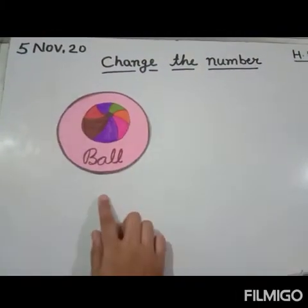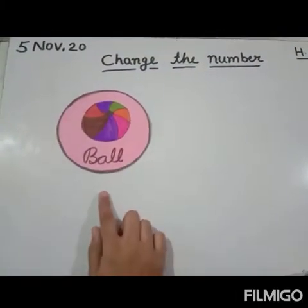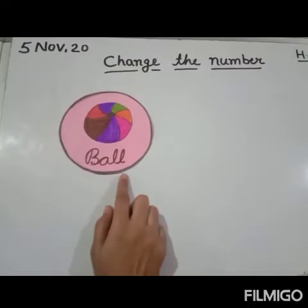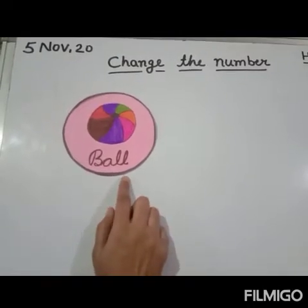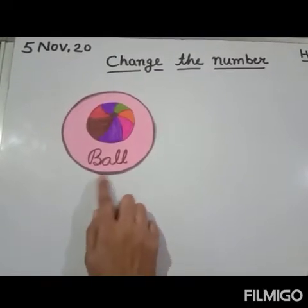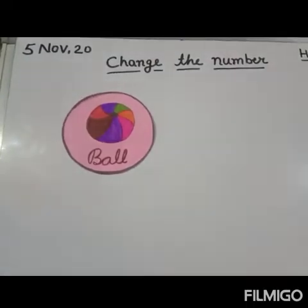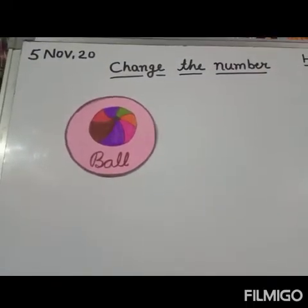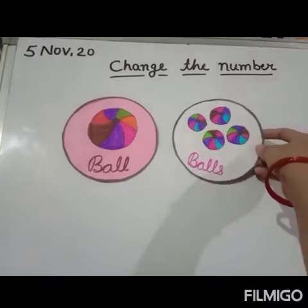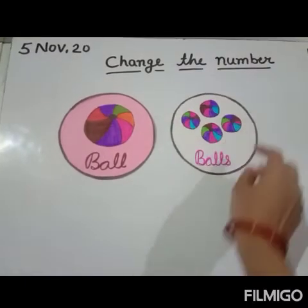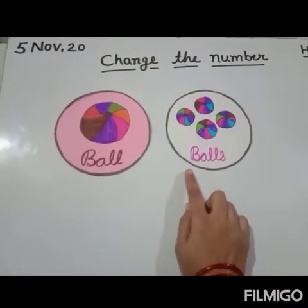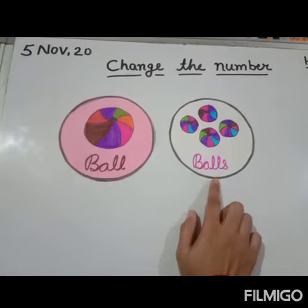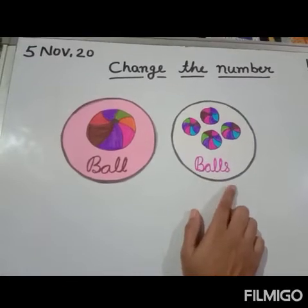Look, what is this? Ball. Spelling of ball: B-A-double L. What is B-A-double L? This one — ball. As we have written ball, and when many balls are going to be written, what is it? Balls. B-A-double L-S. What is it? Balls.